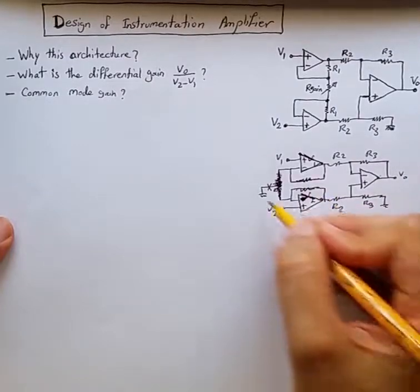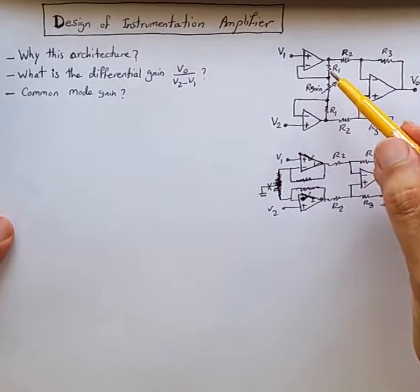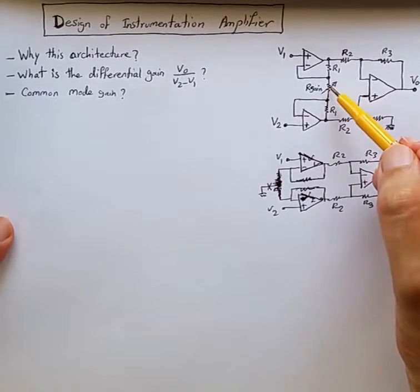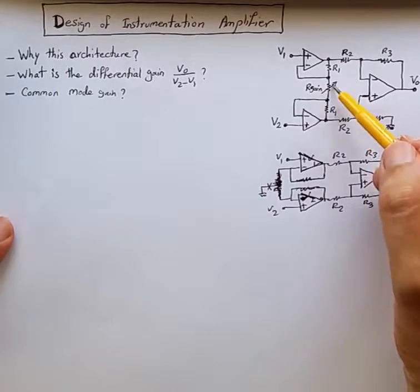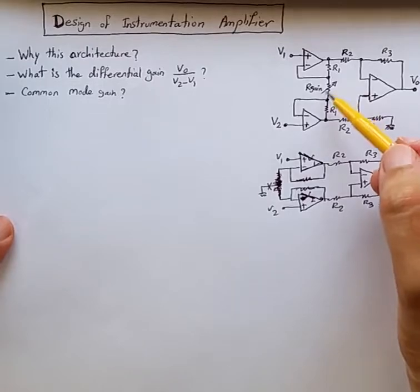Effectively we can show this design with one resistor this way. So now you know the story behind this architecture and we can have a potentiometer or variable resistor here so that by changing the value we can change the gain of the whole circuit.